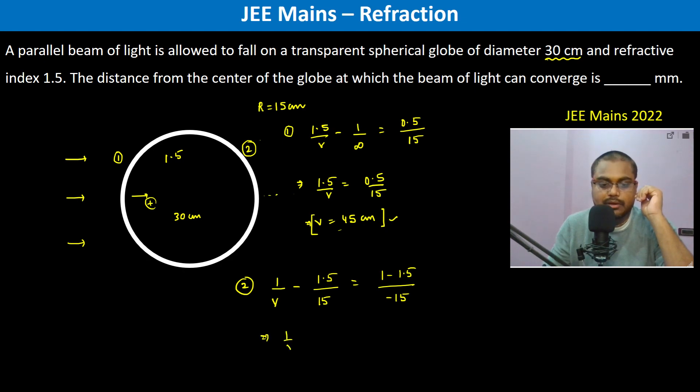So 1/v is equal to 1.5/15, this is plus 0.5/15, so v becomes 15/2 which is 7.5 centimeter.